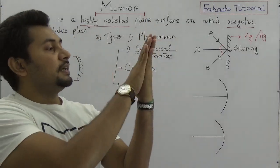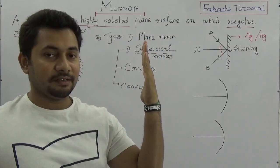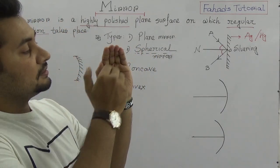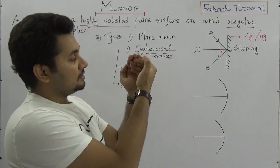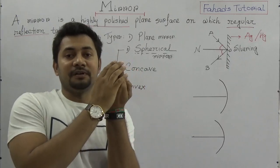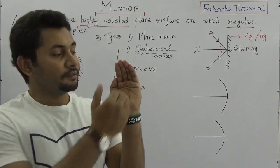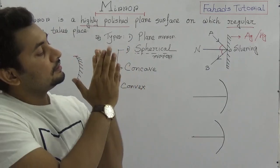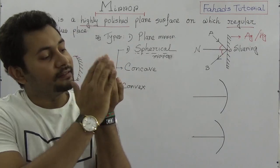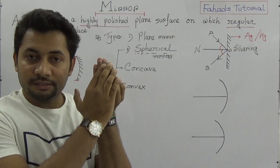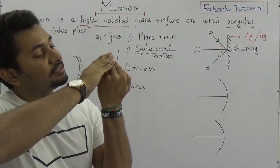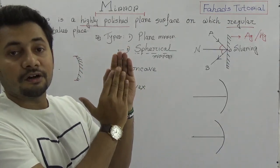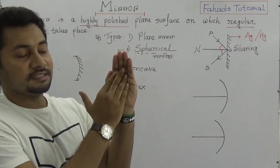If I take a plain page and make it sphere-shaped, you see this inner part is like a cave — that is the concave part. And the outer part is the convex part. If I silver the outer convex surface, that surface acts as a mirror and it is a convex mirror. If I silver the inner surface, that surface acts as a mirror and it is a concave mirror.